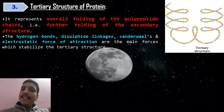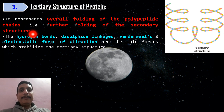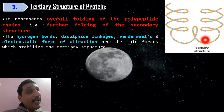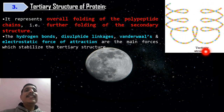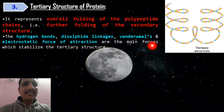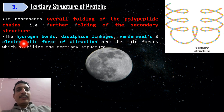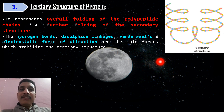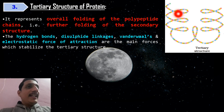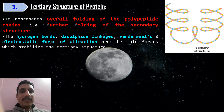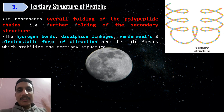Tertiary structure represents the overall folding of the polypeptide chain. Secondary structure is also folding, whereas tertiary structure is the overall — that means further folding of the secondary structure. The secondary structure already folded, and when that is folded again, we get the tertiary structure. This structure is made stable by hydrogen bonds, disulfide bonds, van der Waals forces of attraction, or electrostatic forces of attraction.